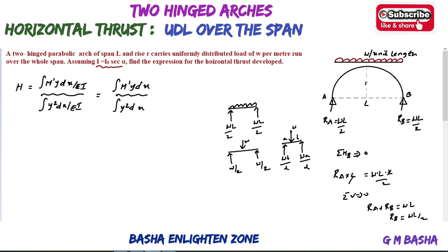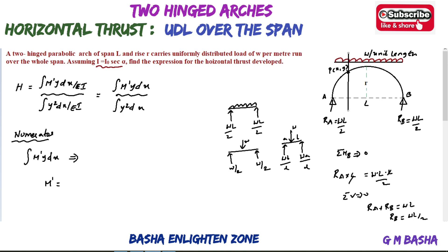Now solve the numerator: the integral of M-dash times y dx. Consider a section XX at a distance X from point A, at a point P(x, y) on the arch. We resolve the moment up to that section: Ra into X, and the UDL up to section X acts anticlockwise, contributing minus W into X into X by 2.